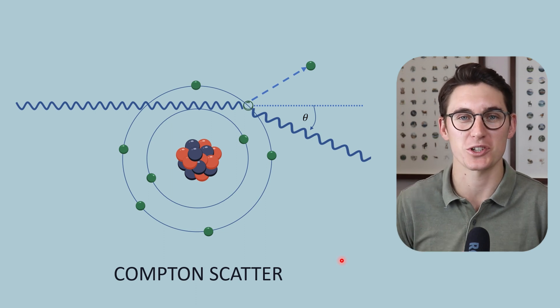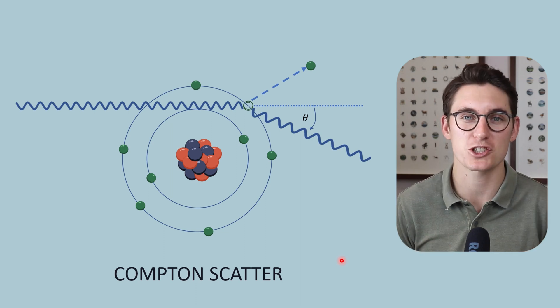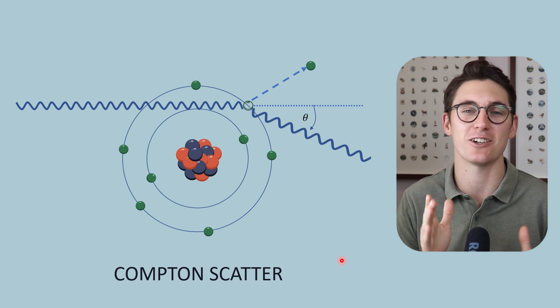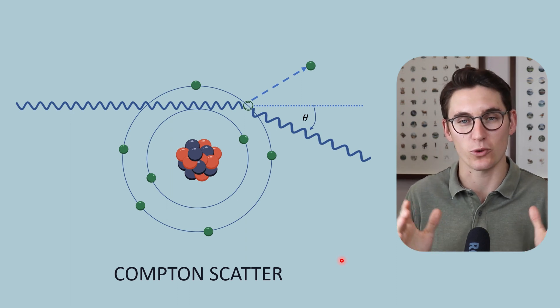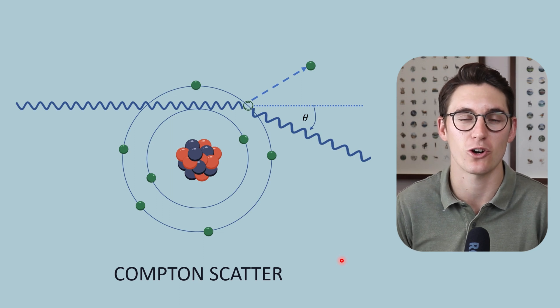We've looked at the photoelectric effect, which is the primary interaction responsible for providing anatomic detail within our radiograph. Now let's look at the primary mechanism for scatter within the patient, known as Compton scatter.